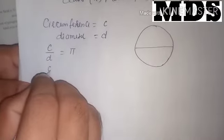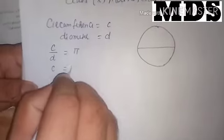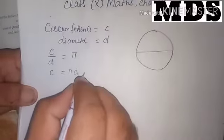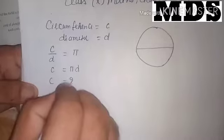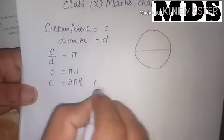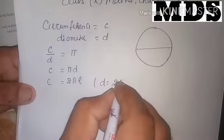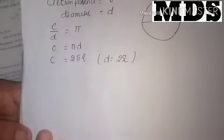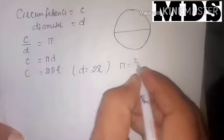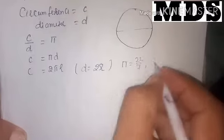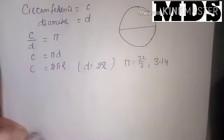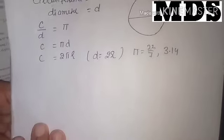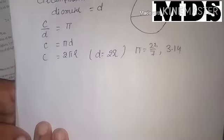Since C/D = π, we get C = πD. Because D = 2r, the circumference of a circle is C = 2πr. The value of π is taken as 22/7 or 3.14, but these are approximate values, not the exact value of π.